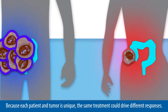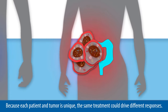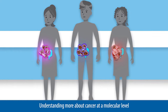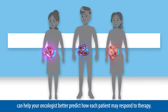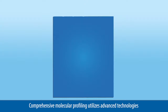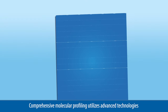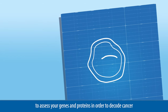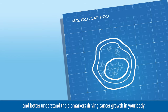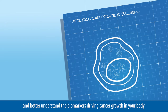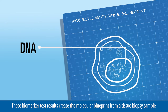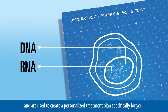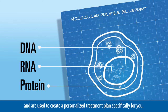Because each patient and tumor is unique, the same treatment could drive different responses. Understanding more about cancer at a molecular level can help your oncologist better predict how each patient may respond to therapy. Comprehensive molecular profiling utilizes advanced technologies to assess your genes and proteins in order to decode cancer, and better understand the biomarkers driving cancer growth in your body. These biomarker test results create the molecular blueprint from a tissue biopsy sample and are used to create a personalized treatment plan specifically for you.